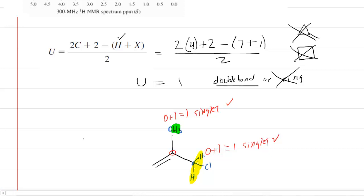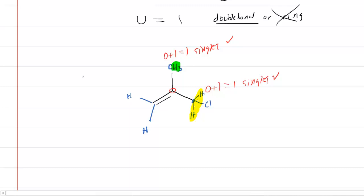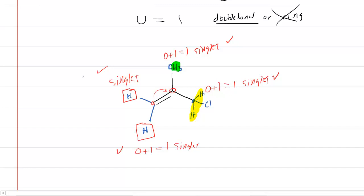The only remaining structural feature is placing the other two hydrogens on the double bond carbons. Each of these should be a separate signal and each should be a singlet. The neighboring carbon for each has zero hydrogens — zero plus 1 equals 1, a singlet — and the same logic applies to the other hydrogen. Everything checks out, and we do have the correct answer.